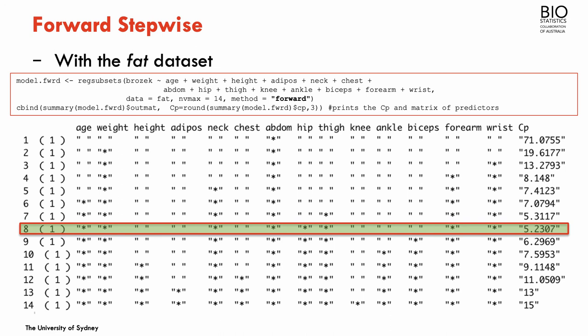In this case, both methods gave the same subset of eight covariates using the same criteria, though the selection matrix is slightly different. It is not always the case — there are situations where forward selection chooses a different subset than backward. Most of the time they tend to agree. There are theoretical reasons why backward is preferred over forward stepwise, so use backward when you can. However, if you have a large number of predictors relative to a small N, or more predictors than observations, you won't be able to fit the full model to start backward selection, so forward stepwise would be the better choice.